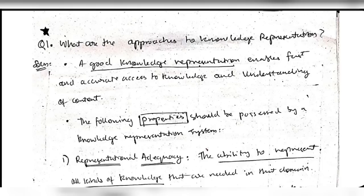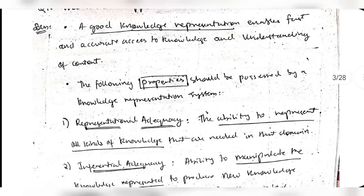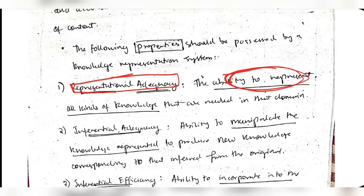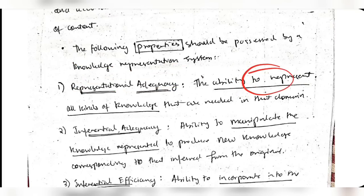There are four properties of knowledge representation. The first is representational adequacy - the ability to represent all kinds of knowledge. Every knowledge representation system must have the ability to represent, otherwise it cannot be called a knowledge representation system. It should not be biased toward representing only certain kinds of knowledge.